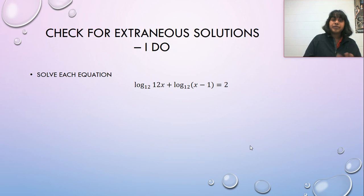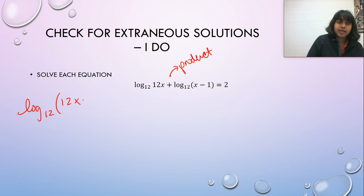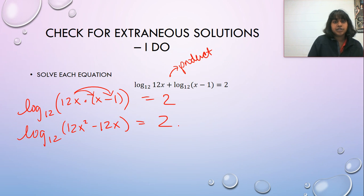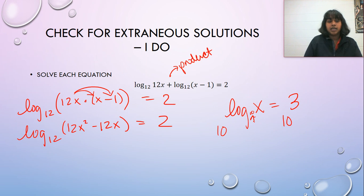My final one might be some might say a little bit harder, but I personally don't think it's that much harder. We're going to go ahead and do the product rule right there. And so I end up with log base 12 of 12 X times X minus one is equal to two. This can be distributed. And that becomes log base 12 of 12 X squared minus 12 X equals two. And now we have to figure out how this cancels. Log of X equals three, you would have taken 10 from both sides because there's an invisible 10 right here. However, my base is not 10.